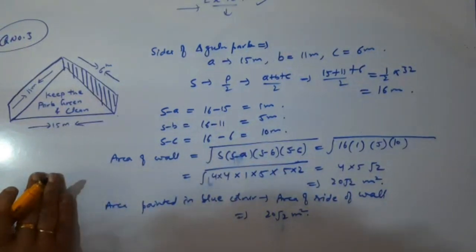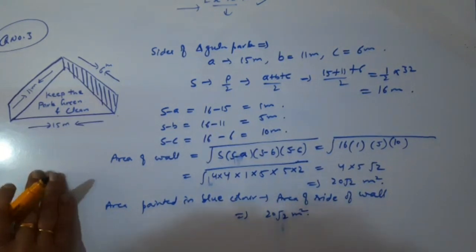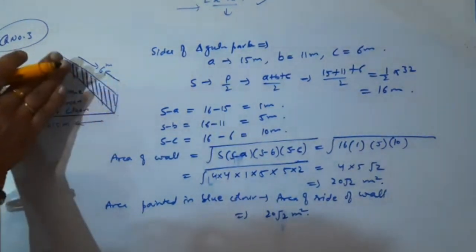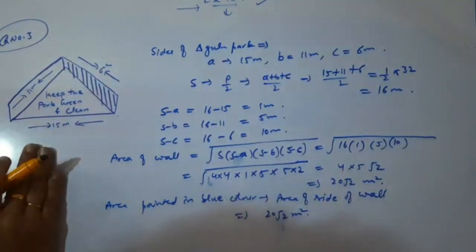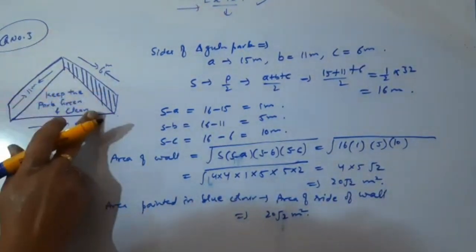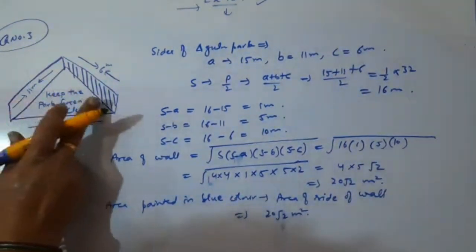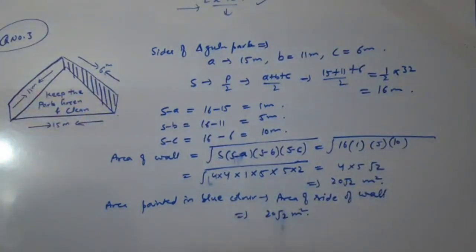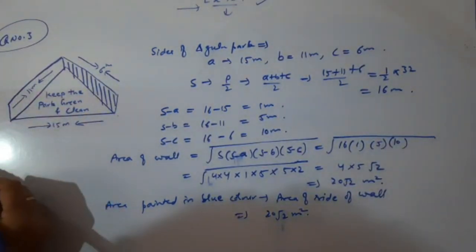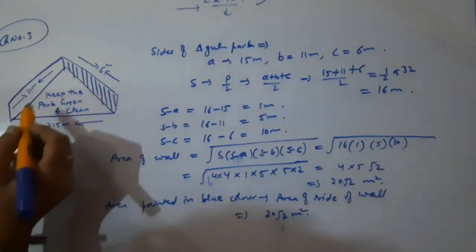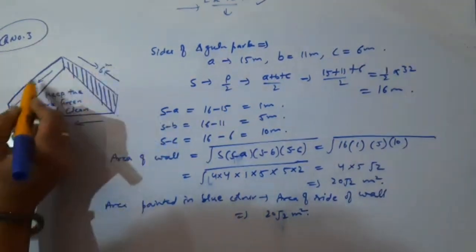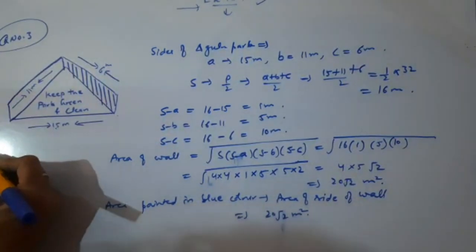What is this question asking? There is a slide in a park. One of its side walls has been painted in blue color. If the sides of the wall are 15 meters, 6 meters, and 11 meters, then find the area painted in the color.